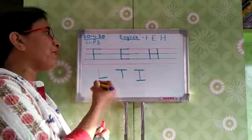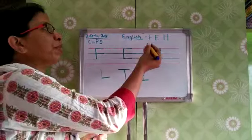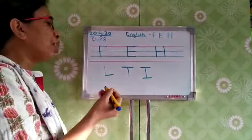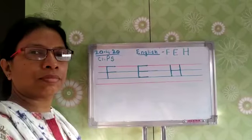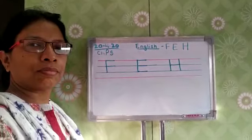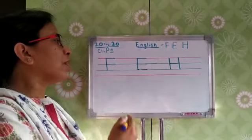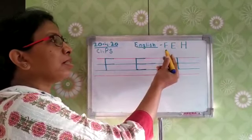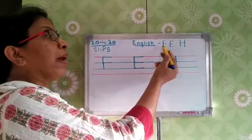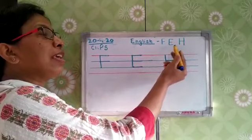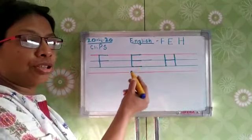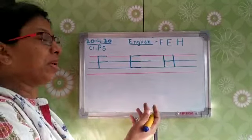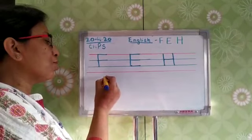Now we move to the formation of letters F, E, and H. We are going to learn to form these letters using more of standing and sleeping lines.